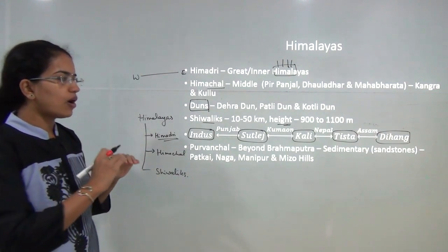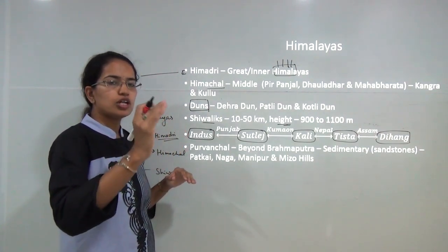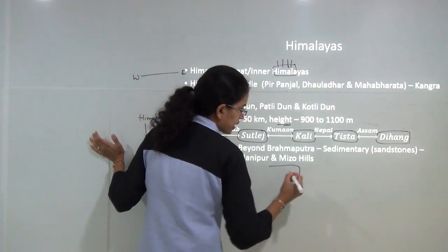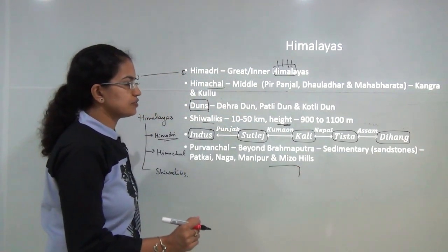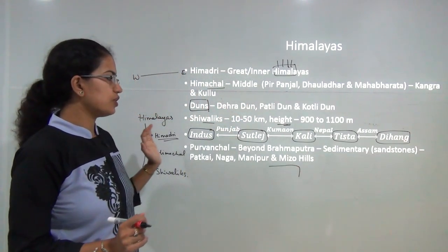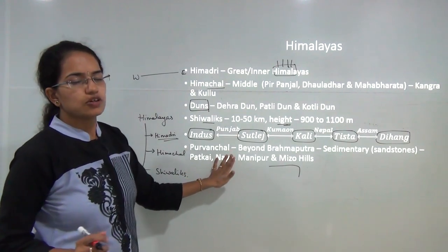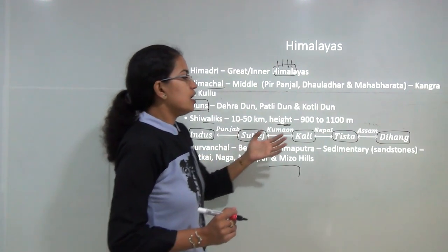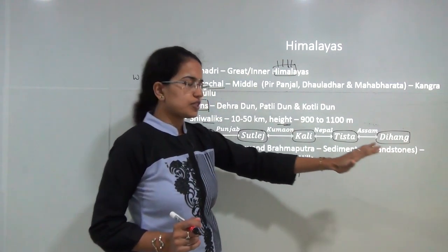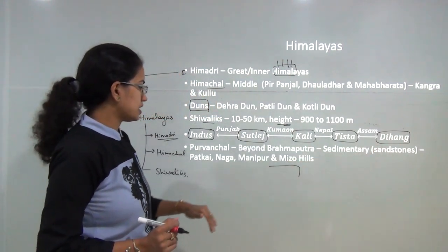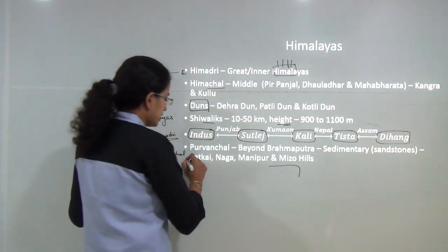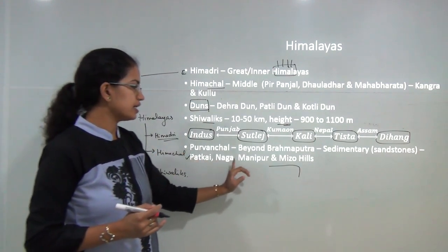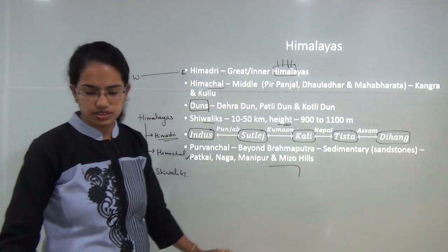Beyond the Brahmaputra river there are hills which bend eastward, known as Purvanchal. They are mainly composed of sedimentary rocks and sandstones. The common ranges forming the Purvanchal are the Patkai Bums, Naga Hills, Manipur Hills, and Mizo Hills.